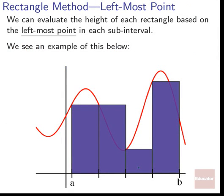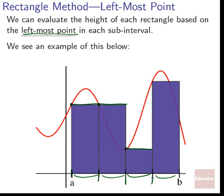Our first common method is the leftmost point method, where we evaluate the height of each rectangle by checking where the leftmost point of each subinterval gets mapped to. For our first subinterval, the leftmost point maps to a certain height, determining the height of that rectangle. We do the same for each subsequent subinterval, determining the height of each rectangle based on its leftmost location.